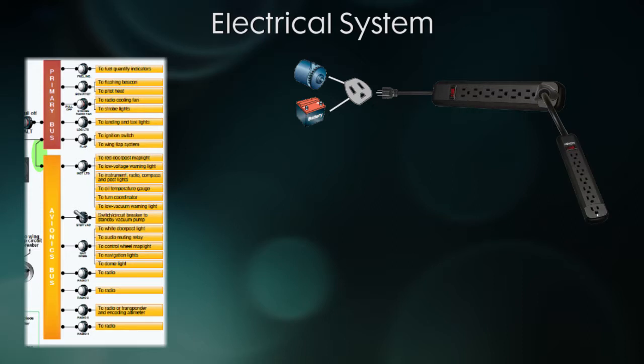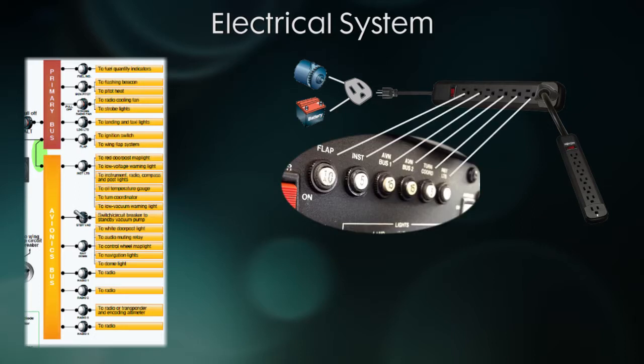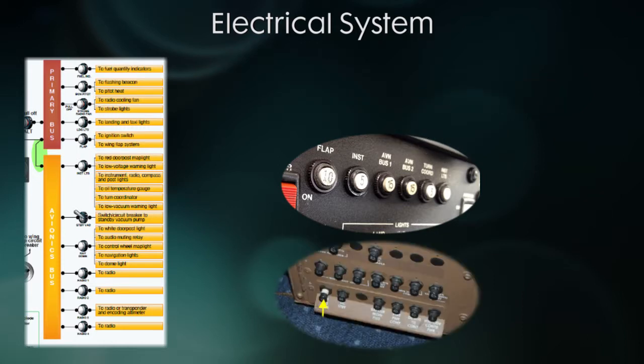Like I mentioned before, all the individual components are plugged into the bus by circuit breakers. A circuit breaker is basically a connector that connects the thing you're trying to power to the bus. If a circuit breaker pops, there is no current flowing through and the respective item is turned off.